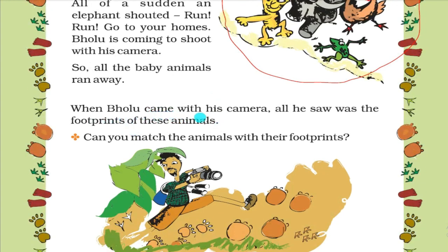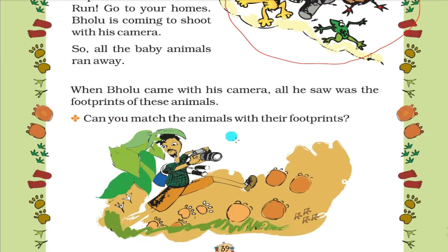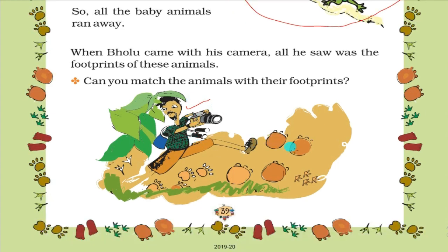When Bholu came with his camera, all he saw was the footprints of these animals. So here you can see this man is Bholu. When Bholu came with his camera he saw the footprints of animals. These are the footprints you can see here.